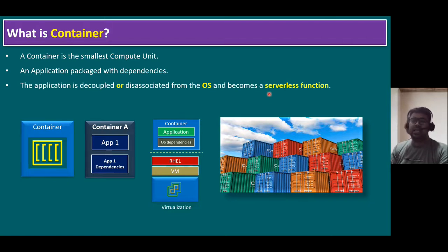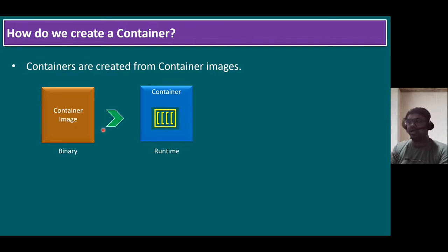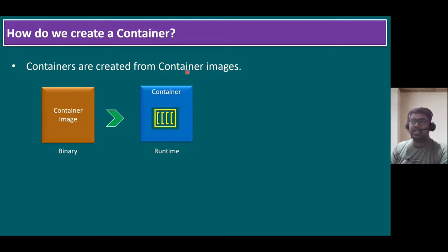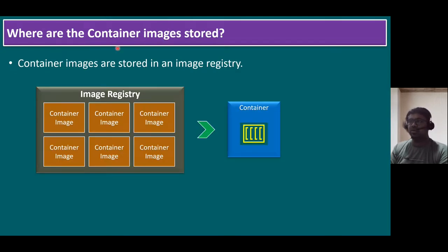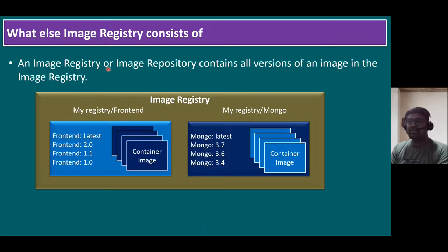How do we create a container? Containers are created from container images. Just like installing a virtual machine requires mounting a virtual ISO file or CD, containers are created from a container image — which is a binary file, similar to an ISO image. Container images are stored in an image registry. This image registry consists of multiple container images, and an image registry or image repository contains all versions of an image.